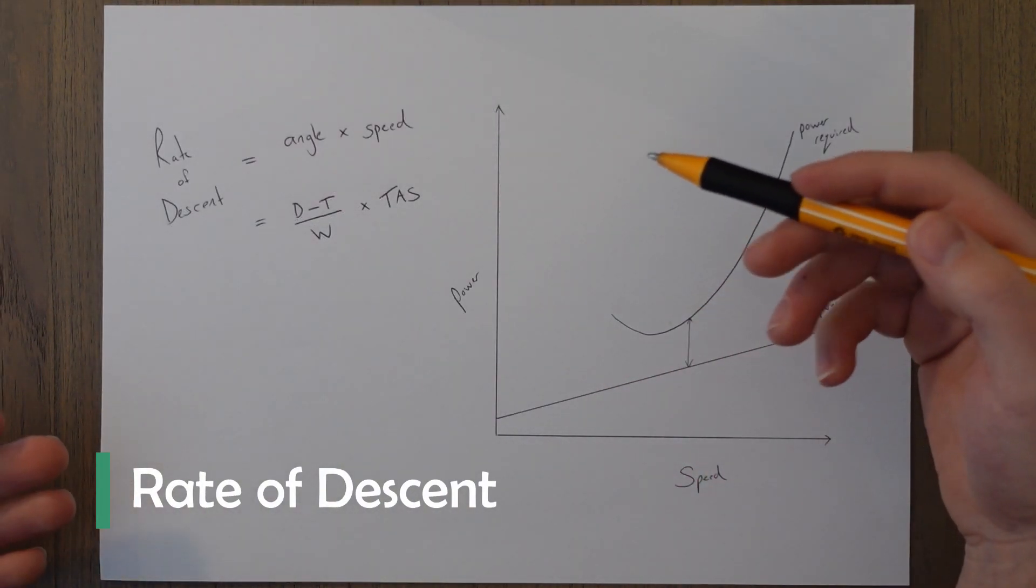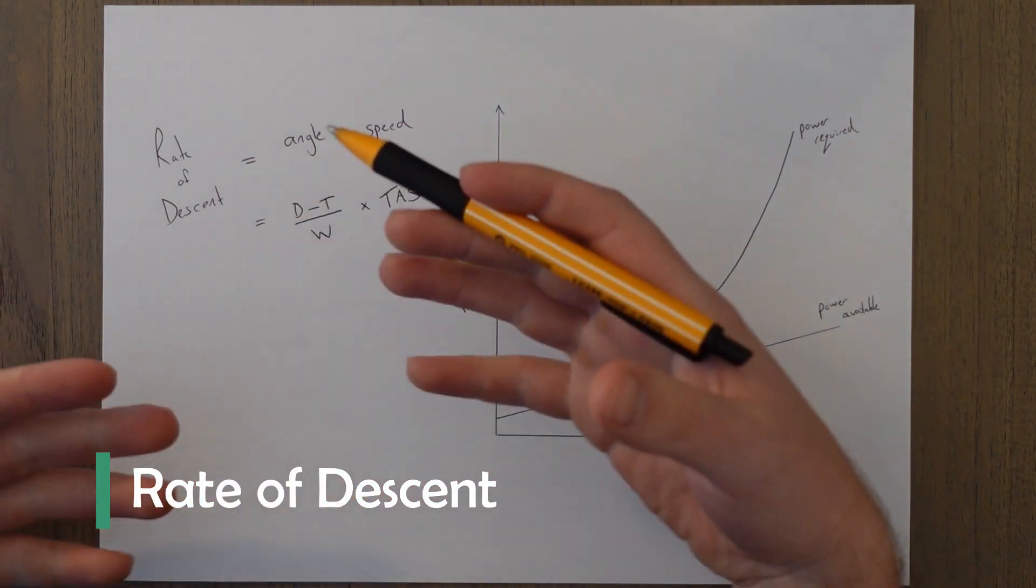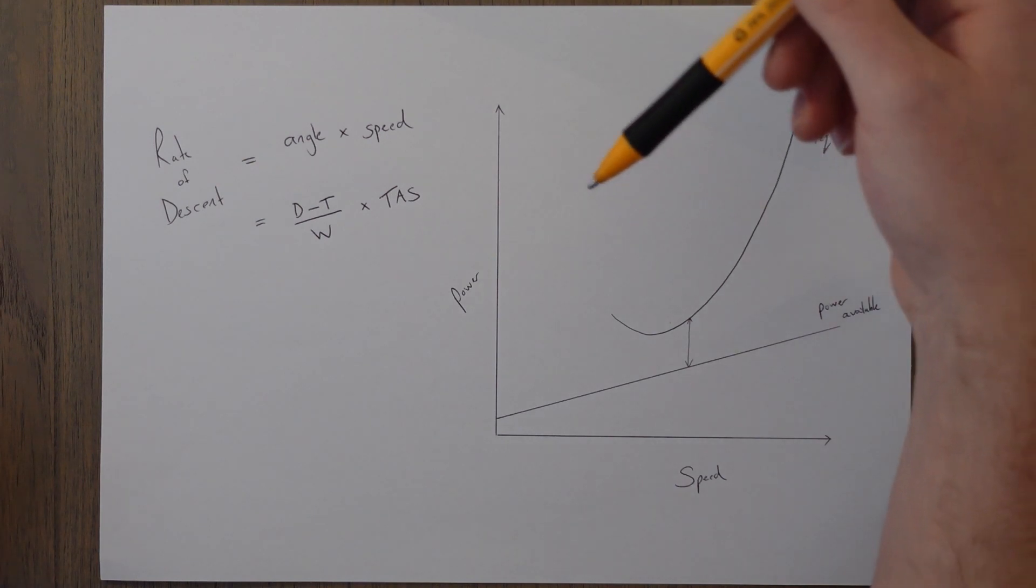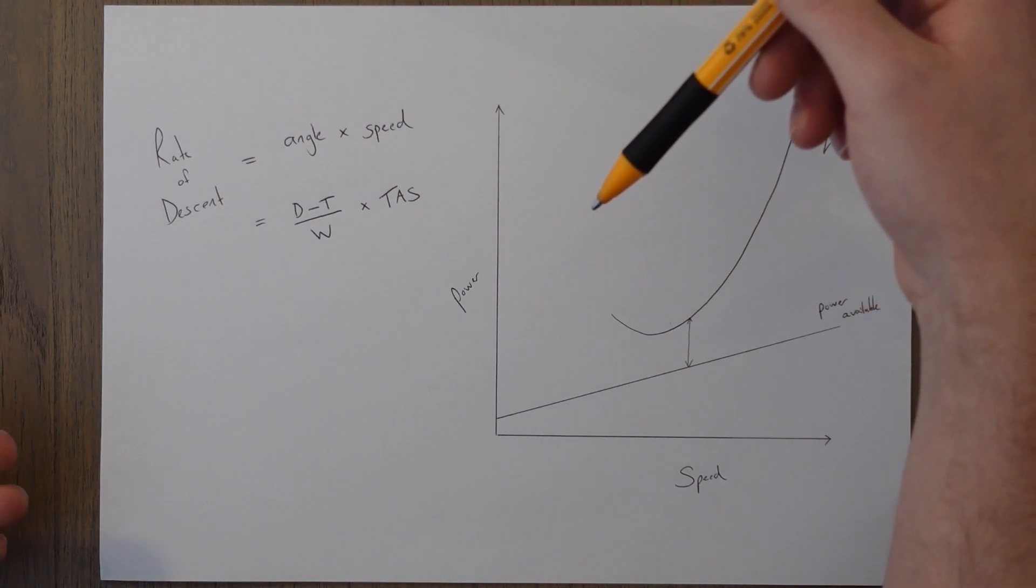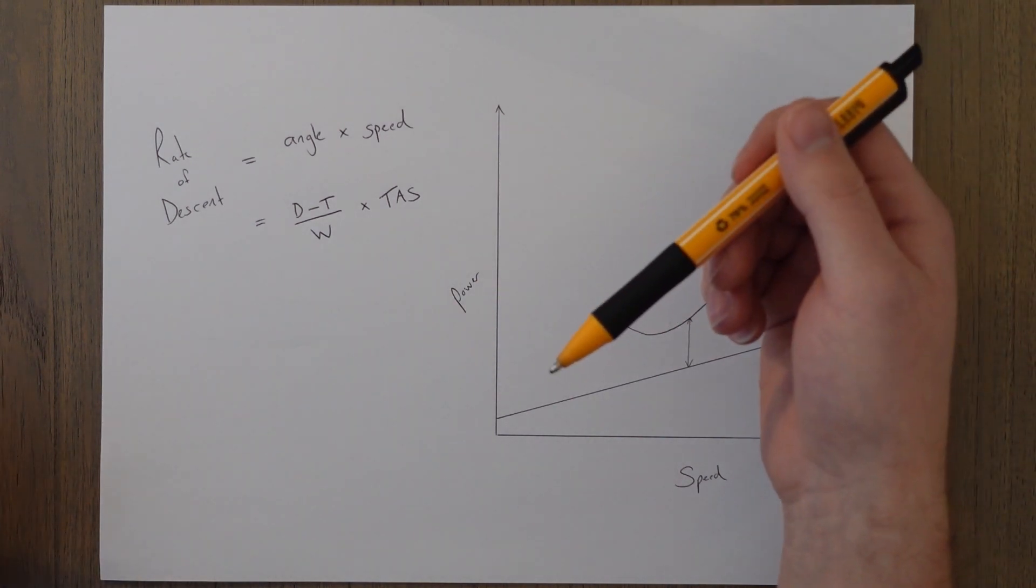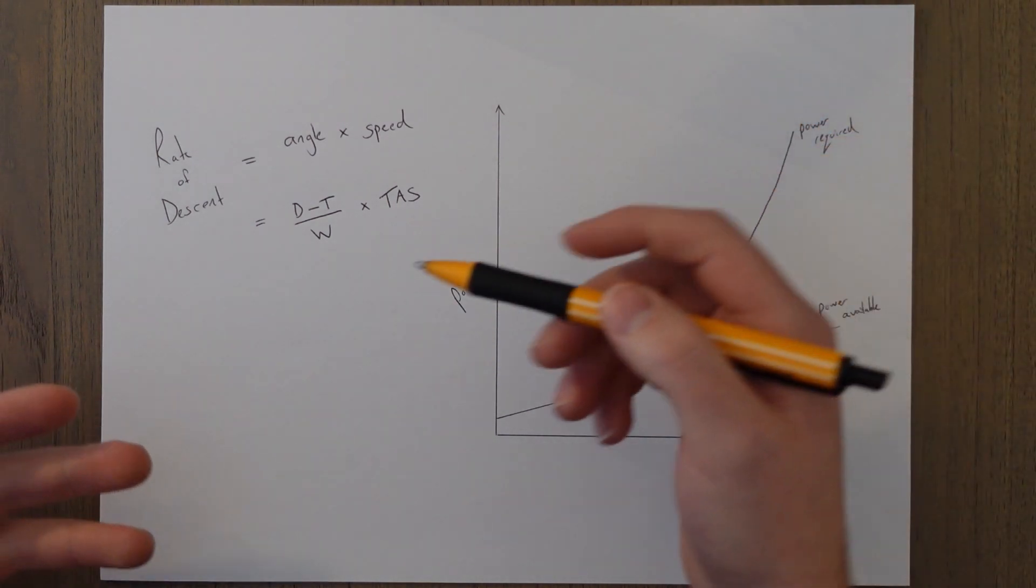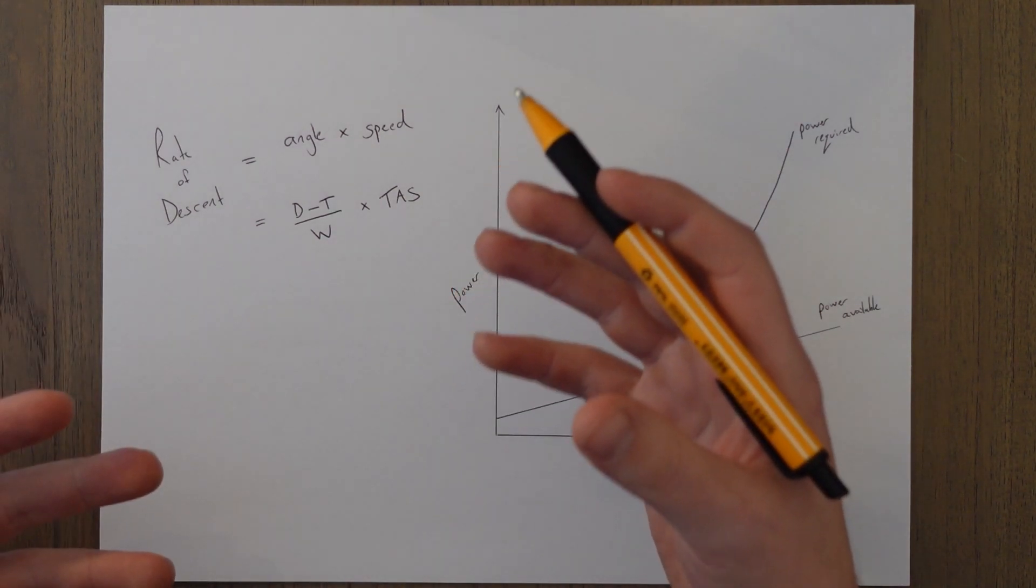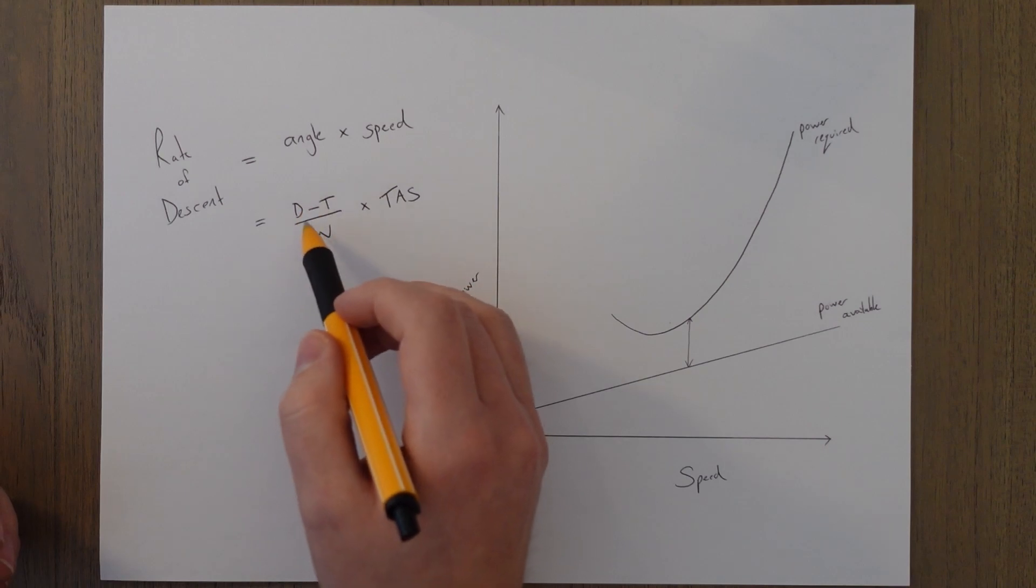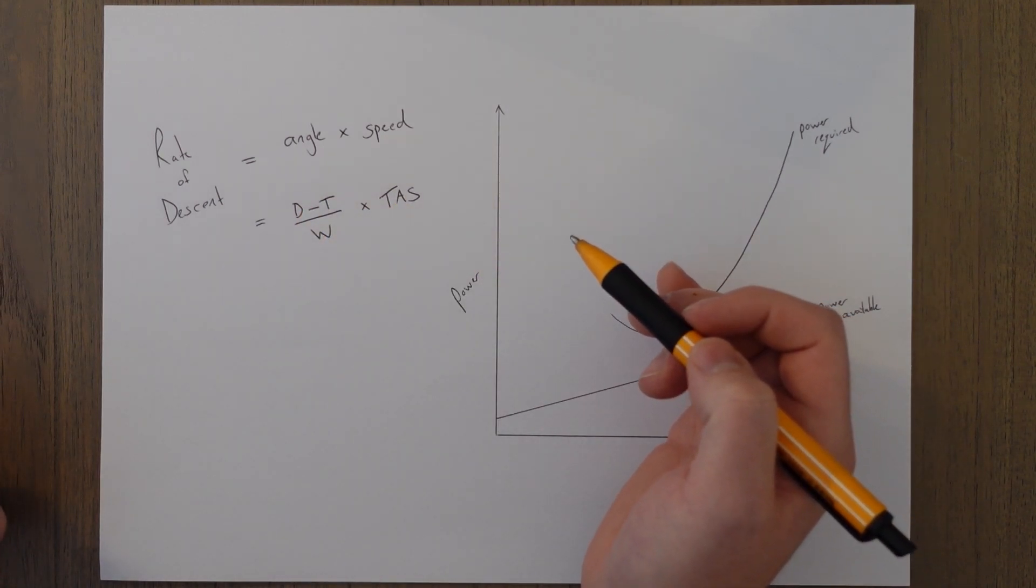Rate of descent is a combination of angle of descent and the speed you're flying down the slope. If you're flying really slowly down a steep angle it makes sense that you wouldn't cover the vertical distance as quickly than if you were flying really fast down a steep angle. As it's a combination of both we need to consider the angle and the true airspeed.